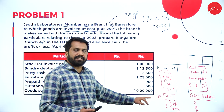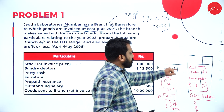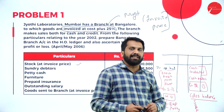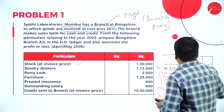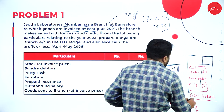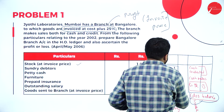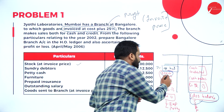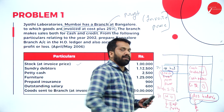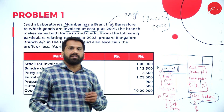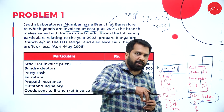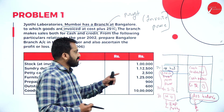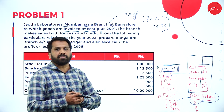Debit side: opening balance, goods sent to branch, head office expenses, petty cash. Credit side: cash collected, cash sales, goods returned to branch, along with closing balances. Usually, the opening and closing balance of stock are given at invoice price. Whenever they give invoice price, on the opposite side you have to find out the stock reserve — meaning whatever profit is included, you have to remove it. That is called the stock reserve in your branch stock account.